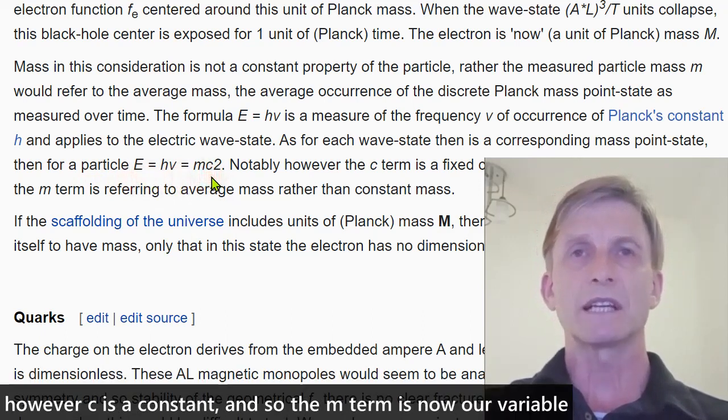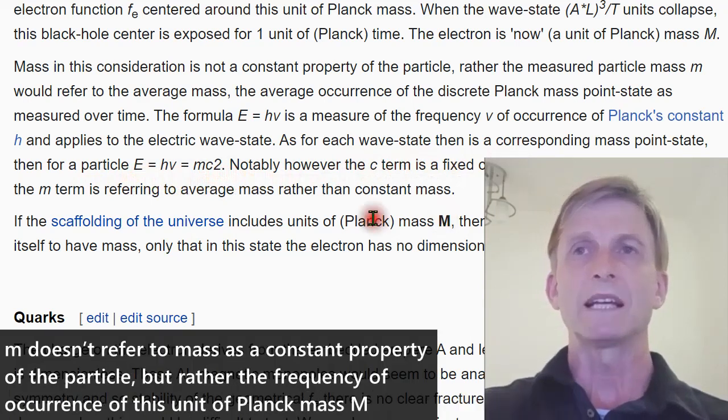However, C is a constant, and so the M term is now our variable. M doesn't refer to mass as a constant property of the particle, but rather the frequency of occurrence of this unit of Planck mass.